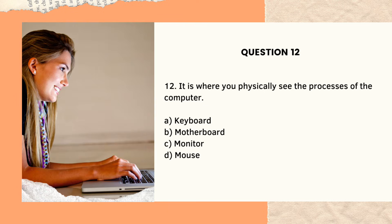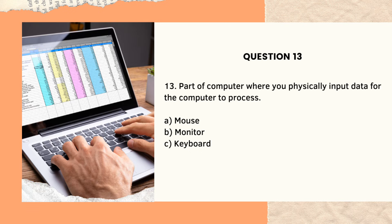Question number twelve: It is where you physically see the processes of the computer. A, keyboard. B, motherboard. C, monitor. D, mouse. The answer is letter C, monitor — it's where you can see everything physically. Question number thirteen: Part of a computer where you physically input data for the computer to process. A, mouse. B, monitor. C, keyboard. The answer is letter C, keyboard.